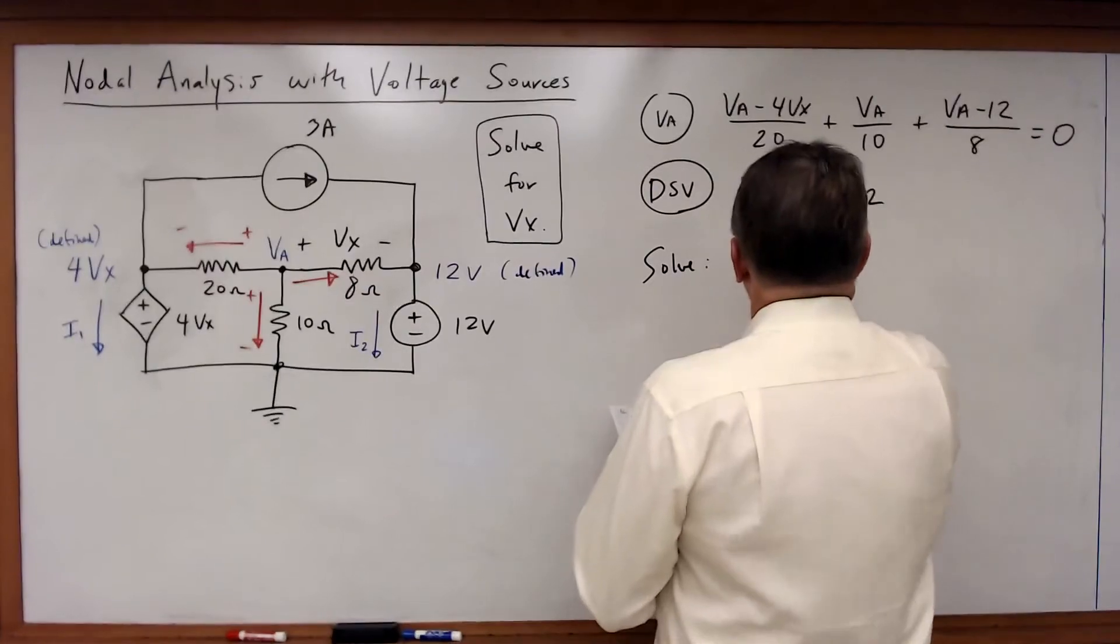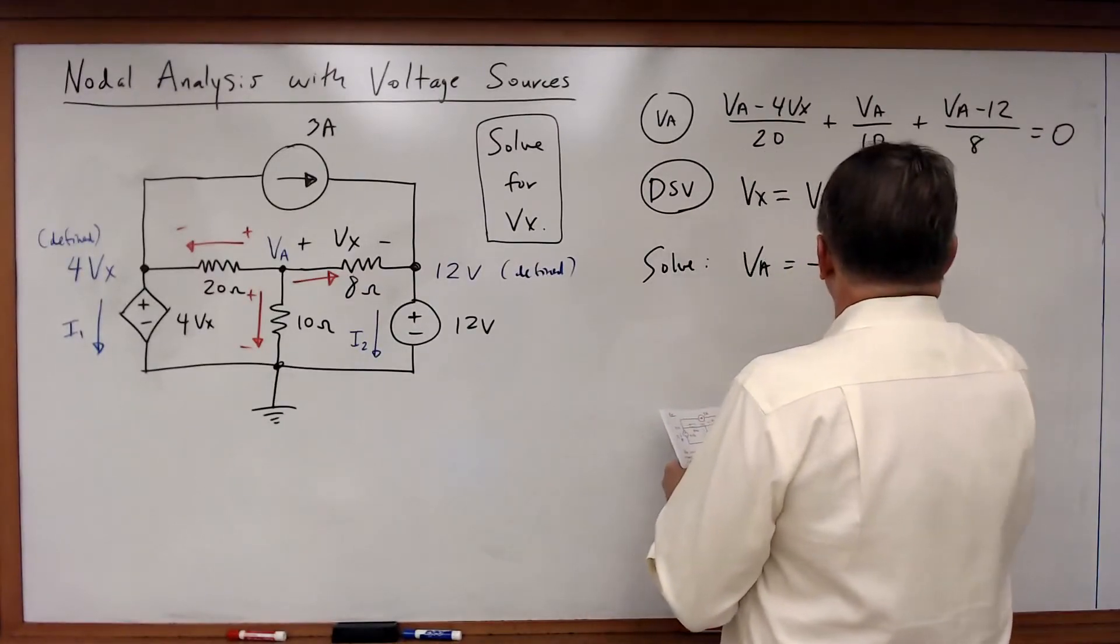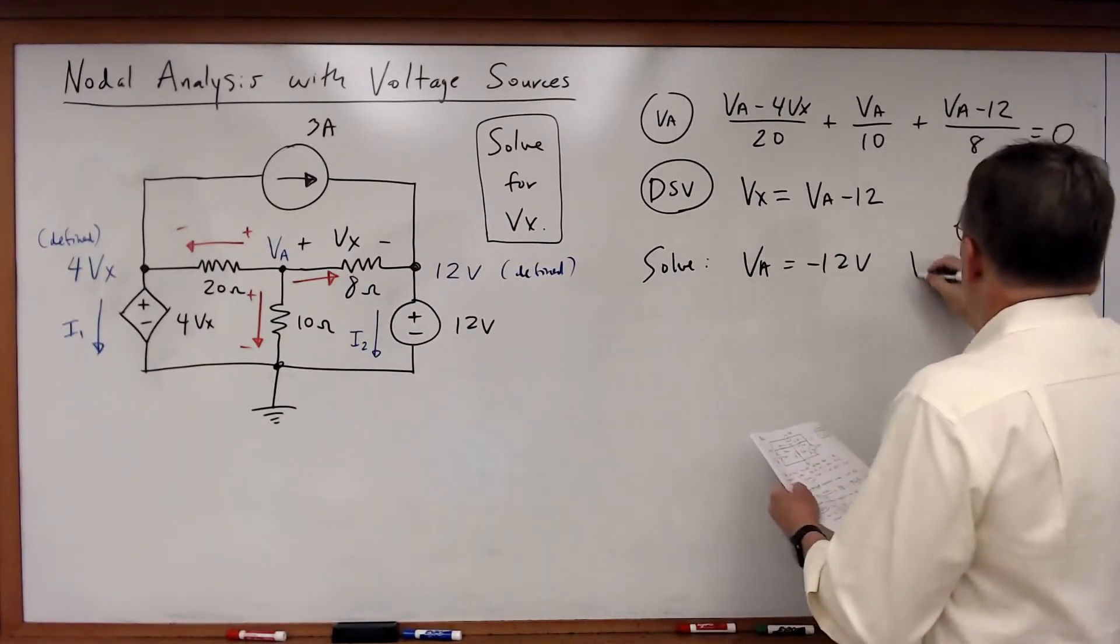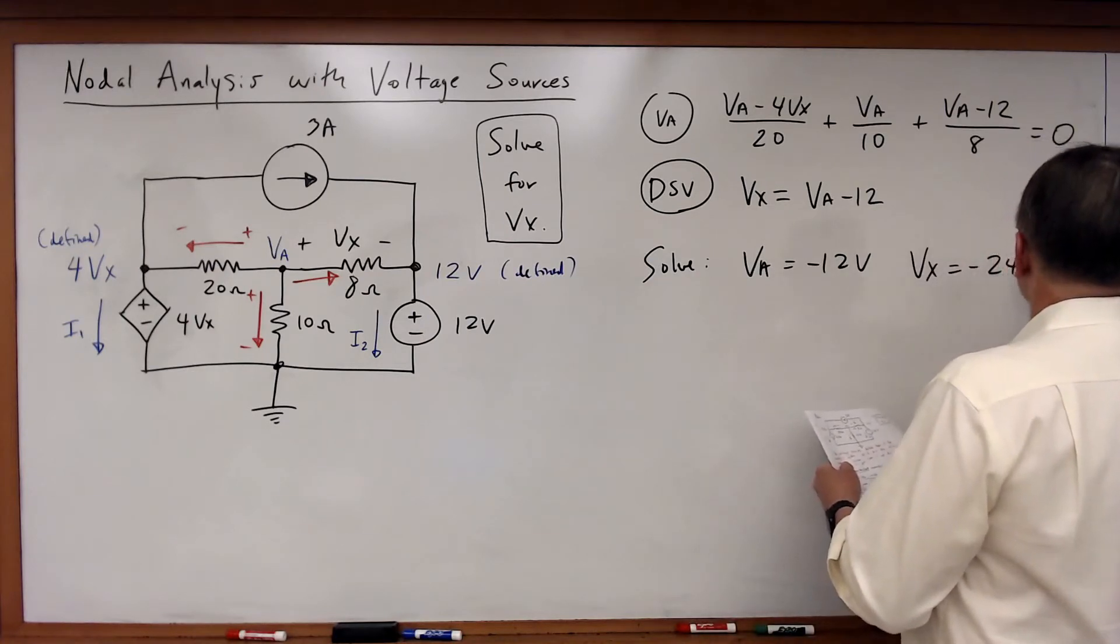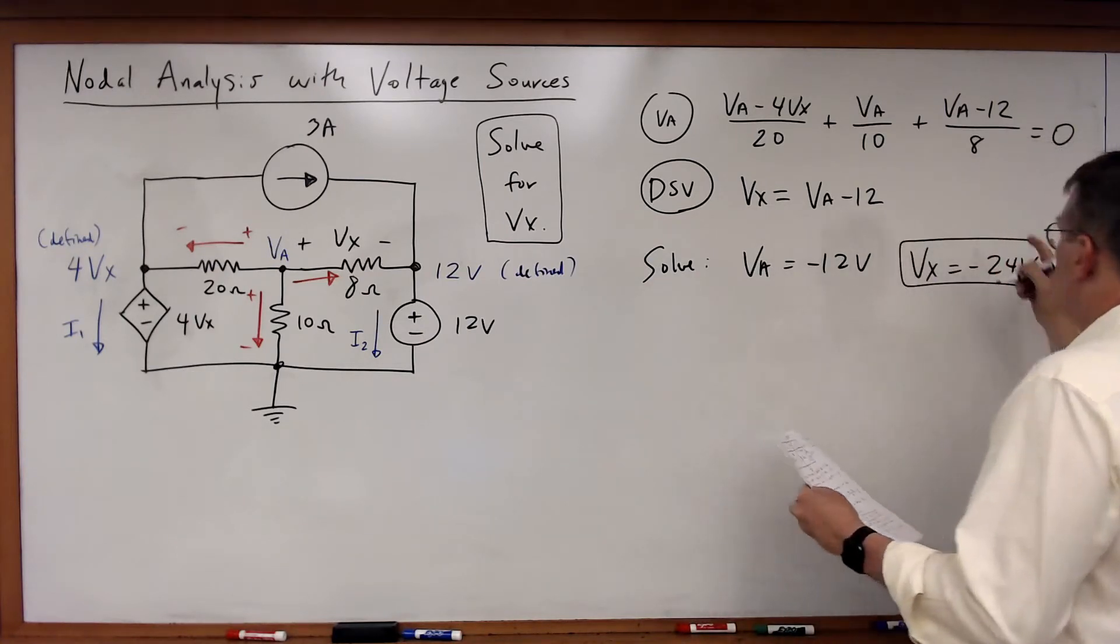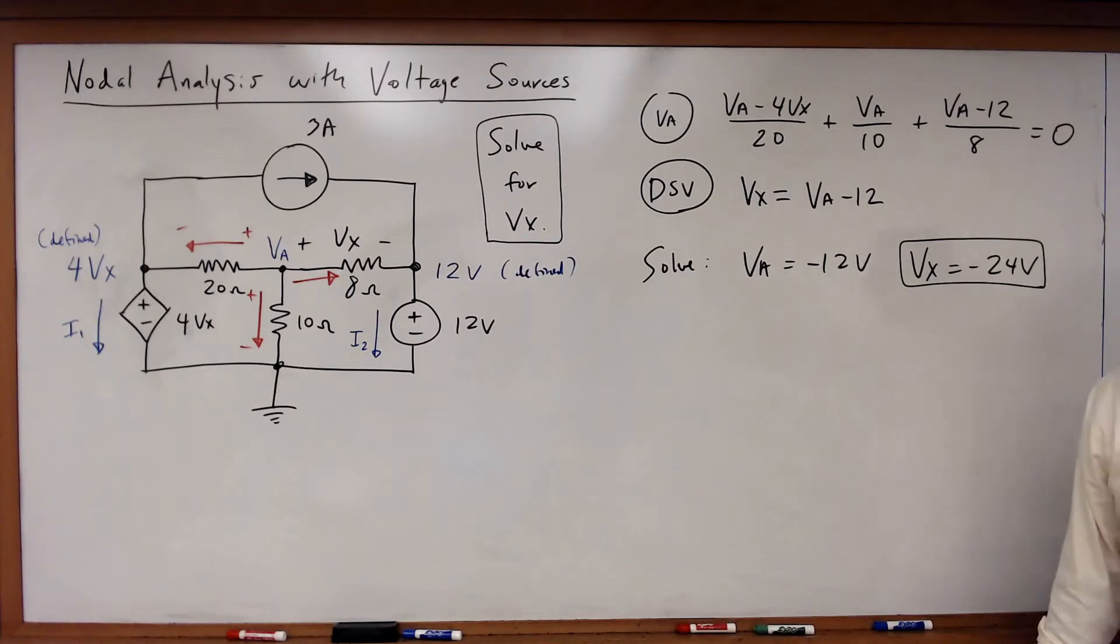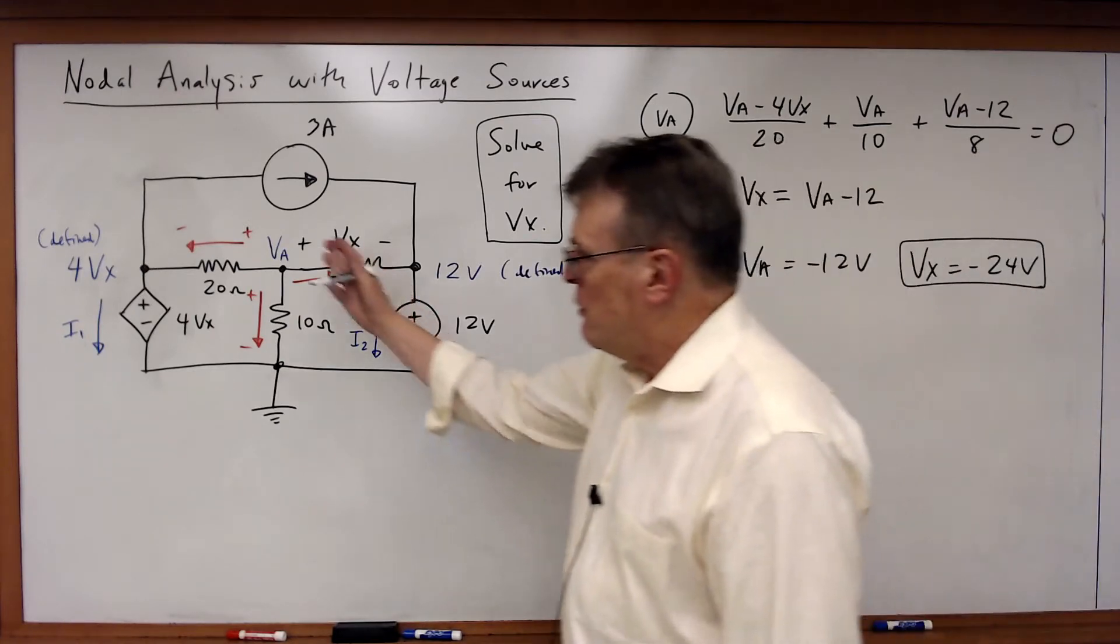And if I do that, what I will get is that VA is equal to -12 volts, and Vx is equal to -24V, and there's the answer.